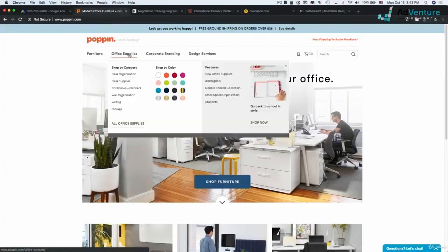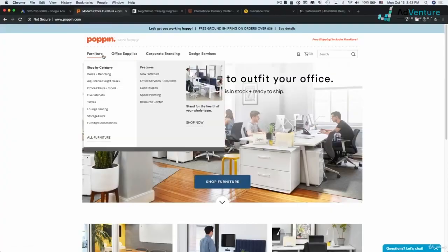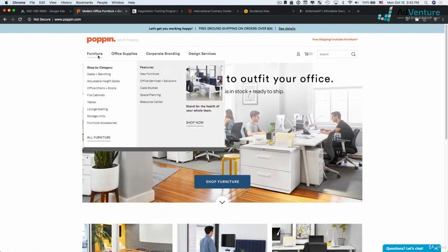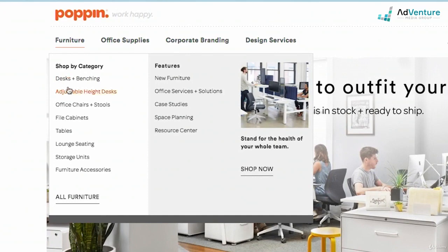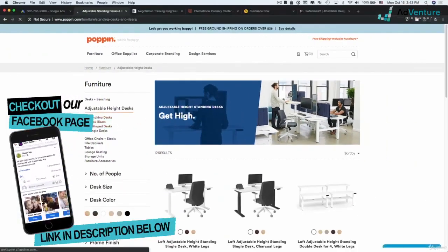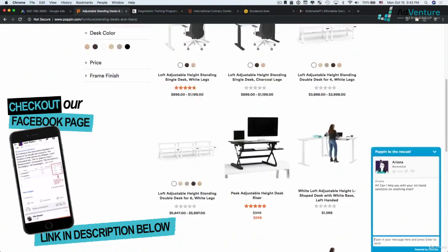There's two different ways that are obvious to me that you could start off building out these campaigns. One is I could have my campaign set up at the top level categories of this navigation. So I can have a campaign for furniture, office supplies, corporate branding, and design services. My ad groups would then potentially be the subcategories. So under my furniture campaign, I might have an ad group for desks and benching, an ad group for adjustable height desks.